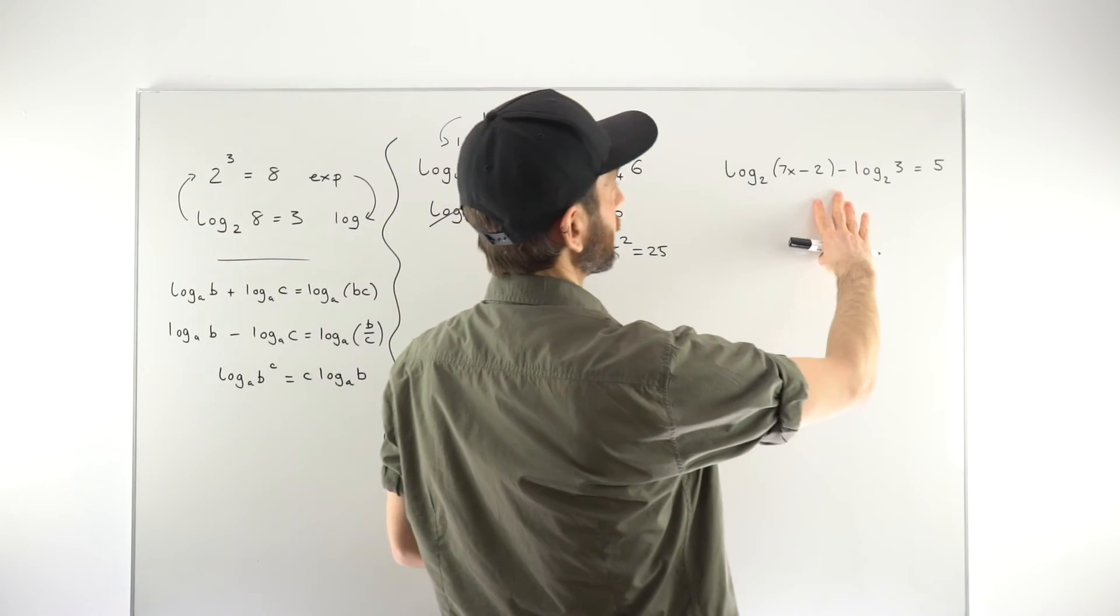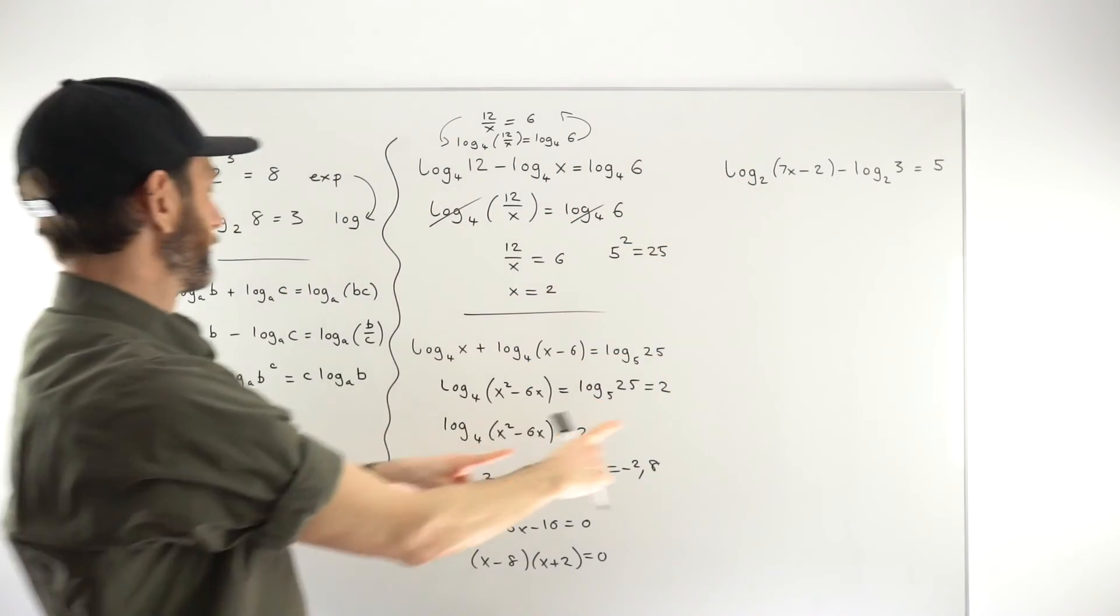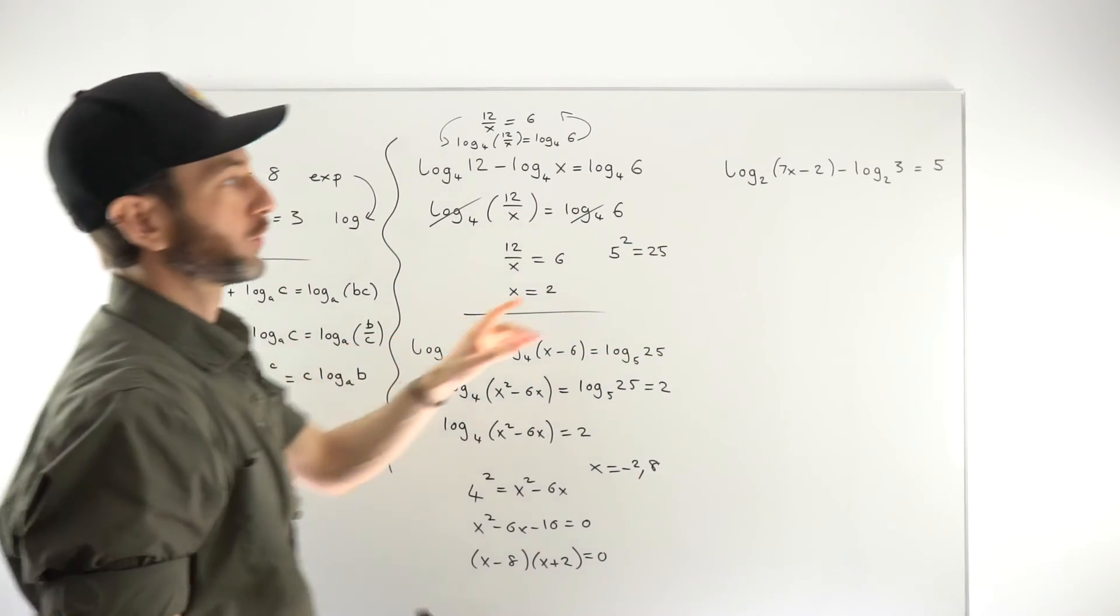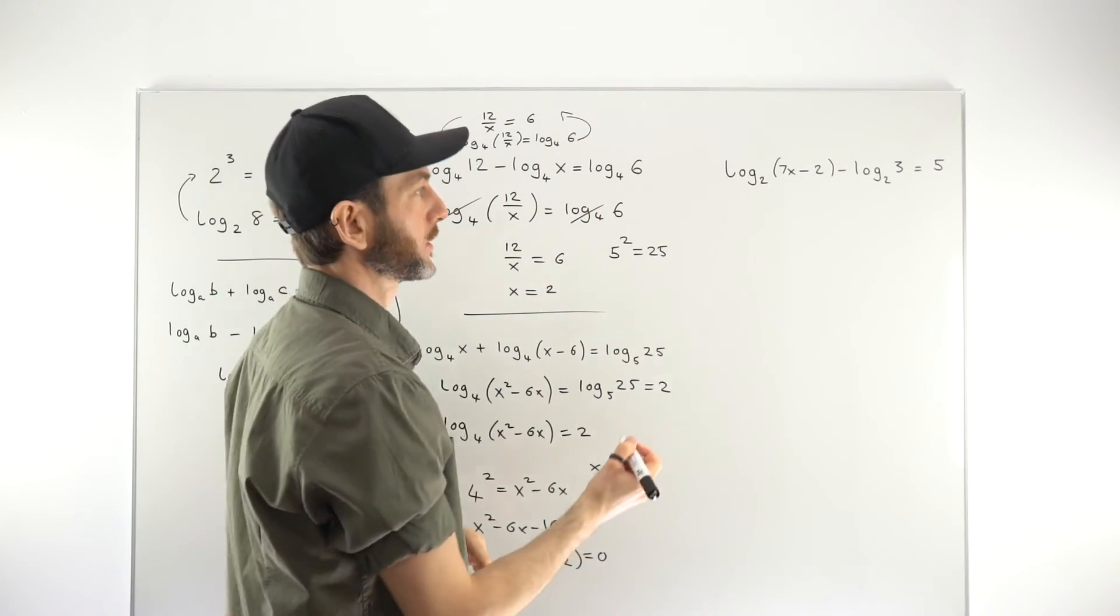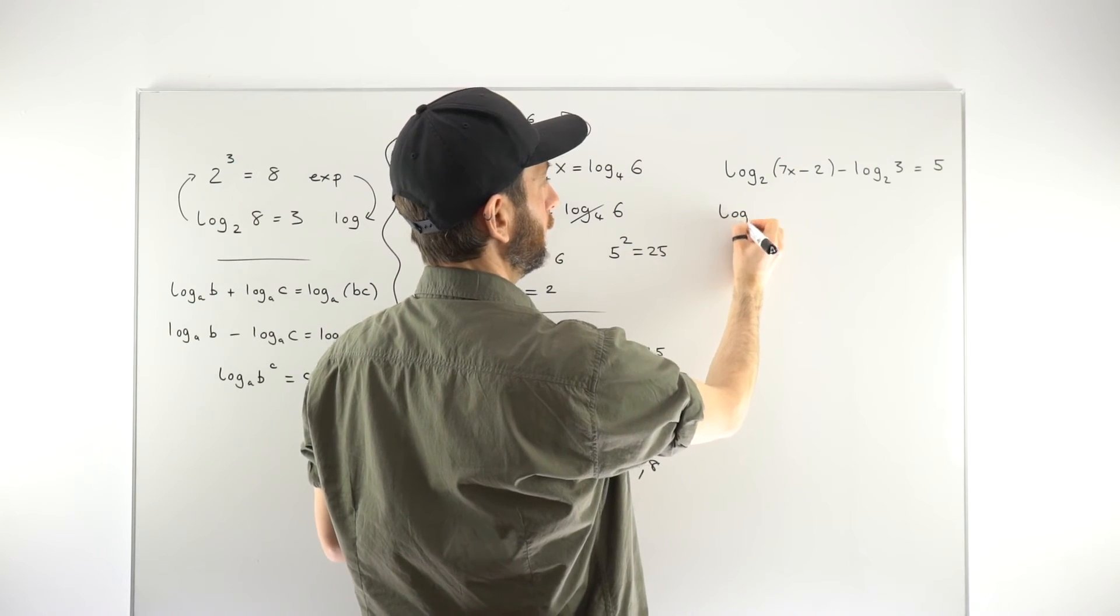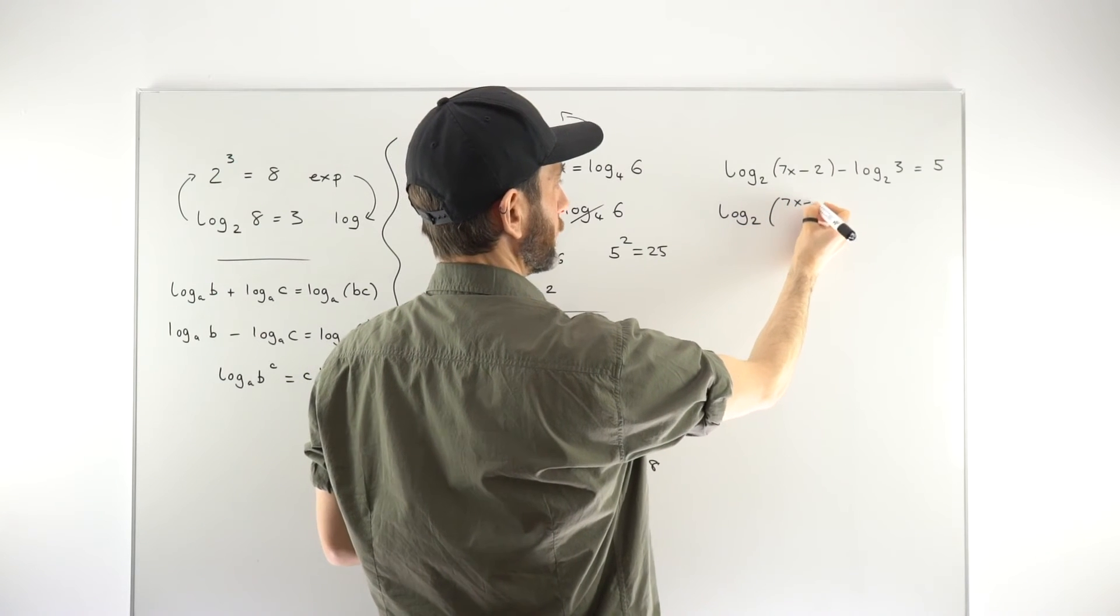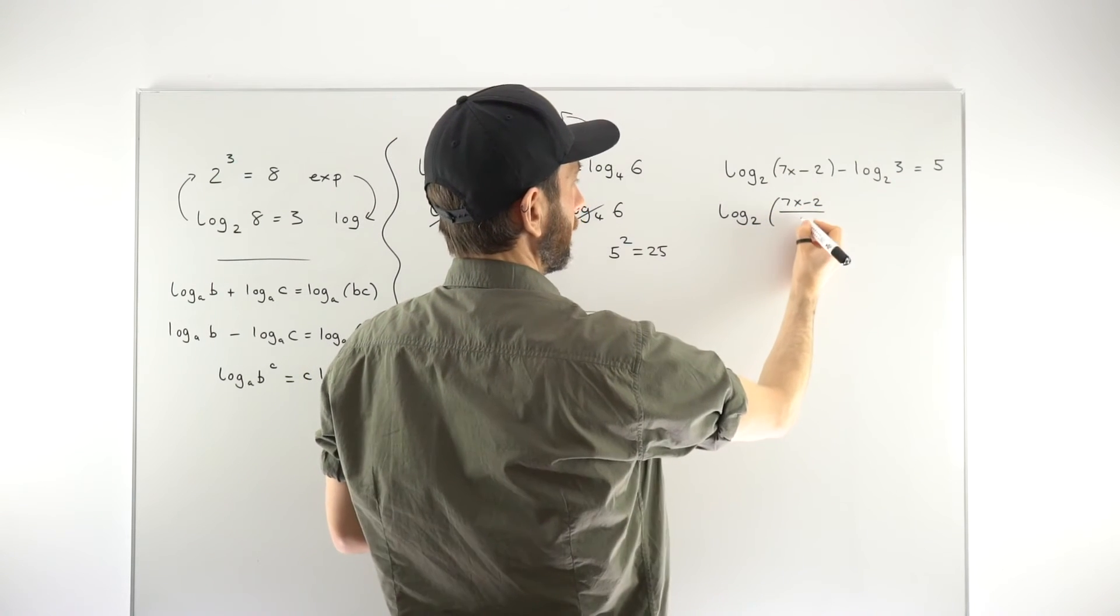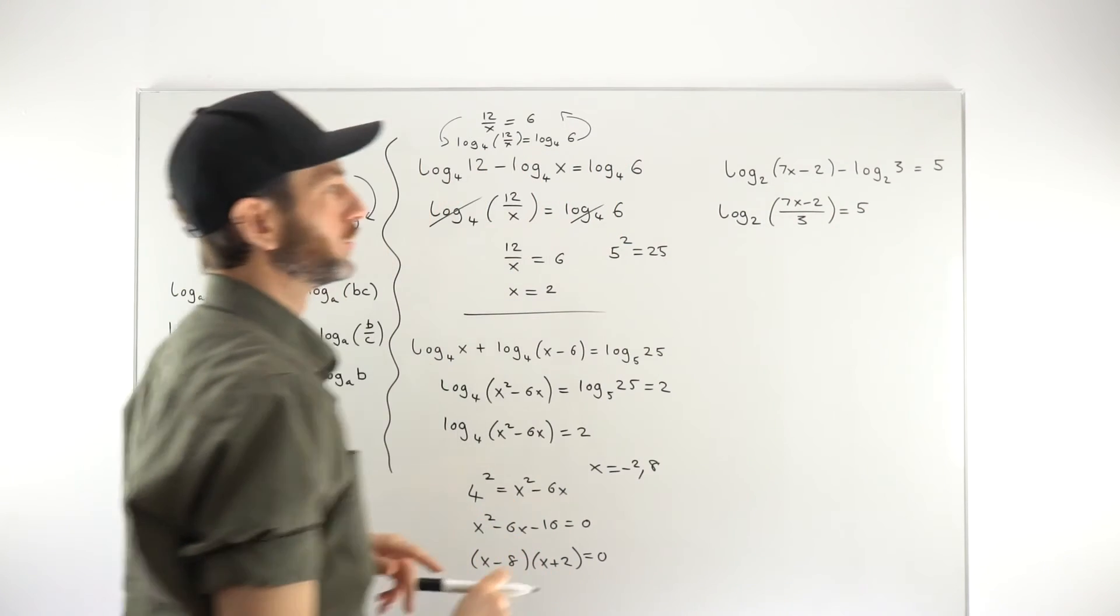Looking at this one, slightly different scenario. We've got two logs that do match up the middle rule and then we've got just a numerical term on the right-hand side. So we'll need to think about what we're going to do this time. But we will start by combining our logs together. So this would be log to base 2 of, put it in a bracket, 7x minus 2 over 3, making that quotient equals 5.